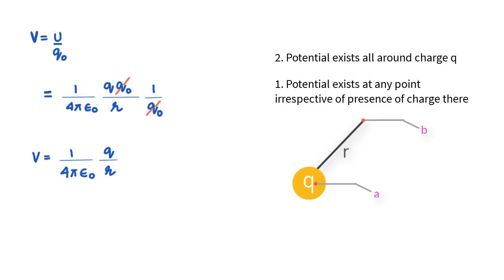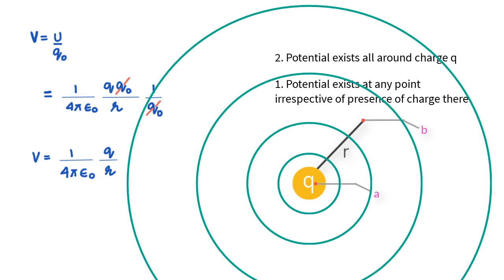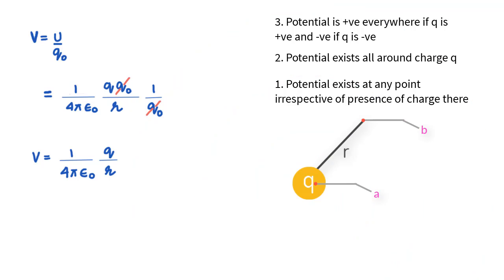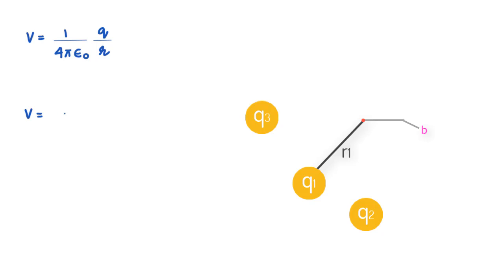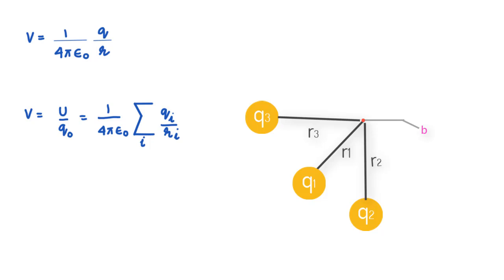Potential exists all around charge Q at any distance R. This potential is positive everywhere if charge Q is positive, and negative everywhere if it is negative. Now if you have more than one charge and you are asked to find potential at a point, all you need to do is find the potential due to each charge as if the other charges are not present, and then sum them up algebraically. The expression for potential due to several charges uses Ri as the distance of the ith charge from where potential is being measured.